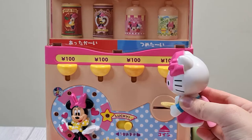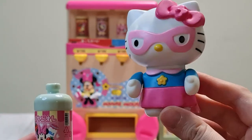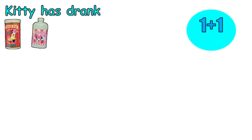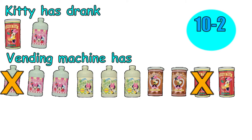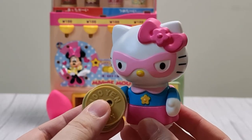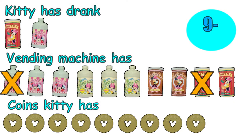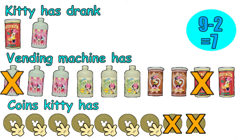But I'm still thirsty! Let me now choose a bottle of strawberry milk! Finished! So, Super Kitty, how many drinks have you drank? I have drank... 1 apple tea plus 1 strawberry milk which equals to 2 drinks! Now, the vending machine is left with 10 minus 2 drinks which Kitty has drank! 10 minus 2 equals 8! 8 drinks left! I had 9 coins at first, minus 2 coins used to buy 2 drinks. So, 9 minus 2 equals 7! 7 coins left!